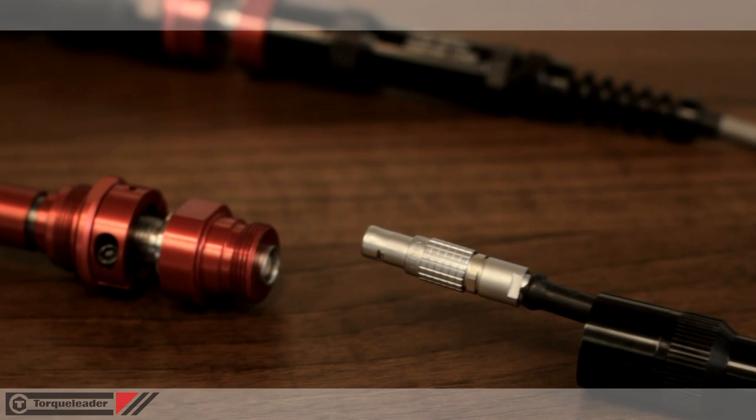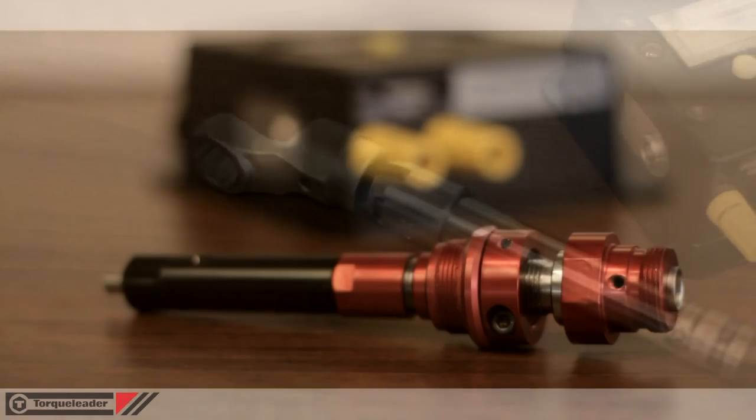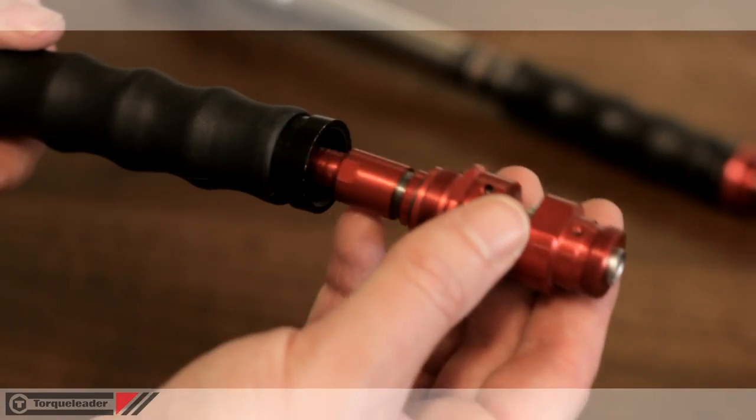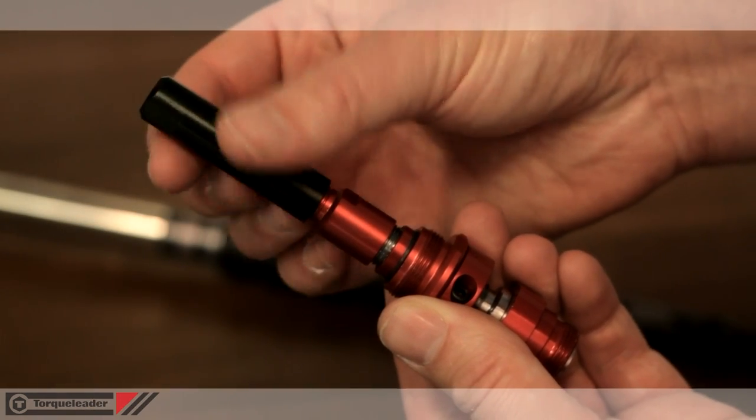The Torque Leader Switch system comprises three elements: the wrench, the switch, and the cable. The switch is a universal fitting with a removable adapter to suit different lengths of wrench.